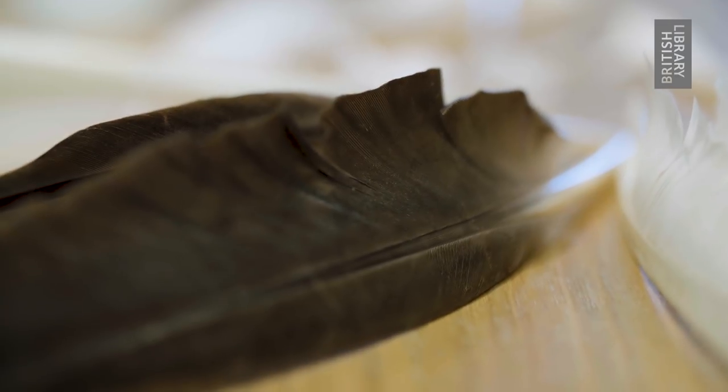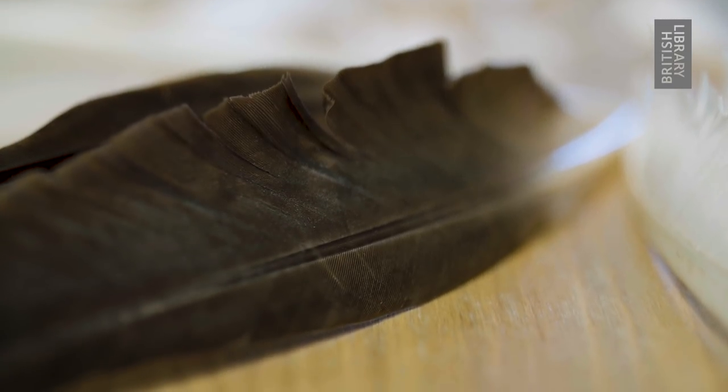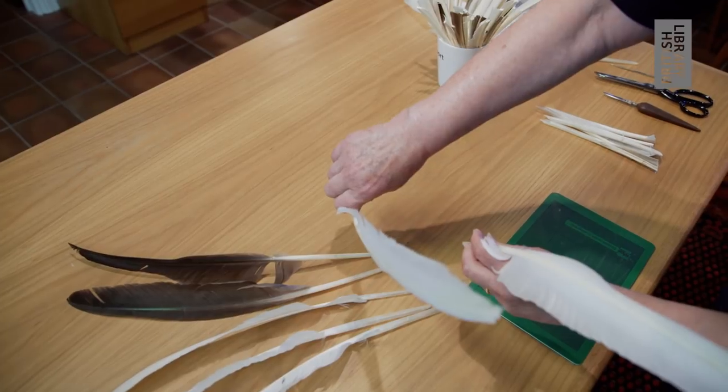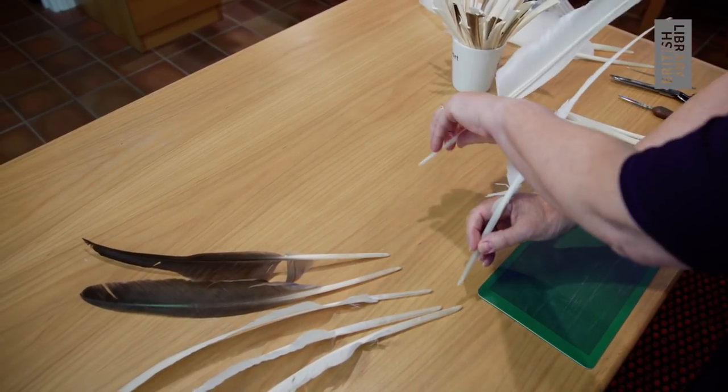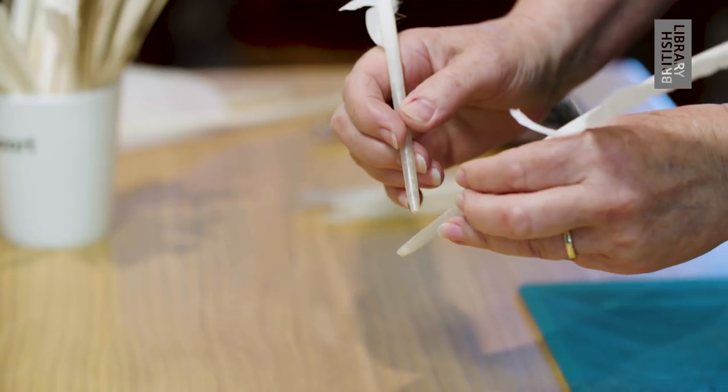There are actually feathers for right and left-handers. So the feathers for a right-hander come from the left wing of the bird, and the feathers for a left-hander come from the right wing of the bird.